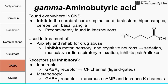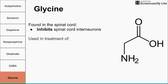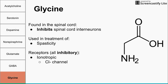To reemphasize: glutamate is the universal exciter, and GABA is the universal inhibitor. Another inhibitor worth knowing is glycine, found only in the spinal cord, where it inhibits spinal cord interneurons. Glycine is used in the treatment of spasticity, such as in cerebral palsy. Its receptor is ionotropic, a chloride channel — so glycine is also inhibitory, like GABA and unlike glutamate. That's the introduction to neurotransmitters. I hope it was helpful — thank you for listening.